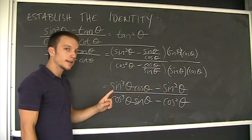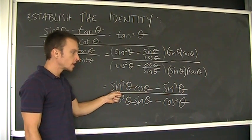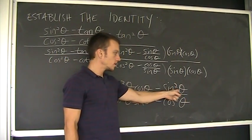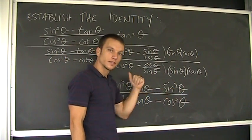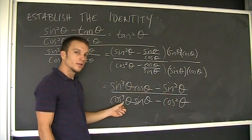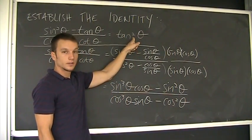Well, it doesn't. But I can see that I'm going to be able to factor out a sine squared of theta from this numerator, because I've got sine cubed here, sine squared here. I'll be able to factor that out. And then down here, what can I factor out? A cosine squared. So when I factor something out, I'll have a sine squared over a cosine squared. That's a good sign.